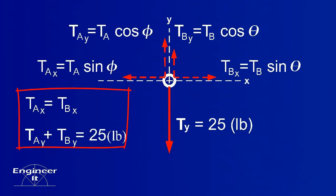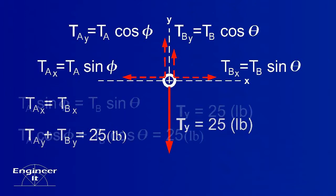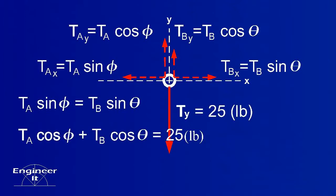It looks like two equations with four unknowns. But substituting the trig functions reduces this to just two unknowns, TA and TB.